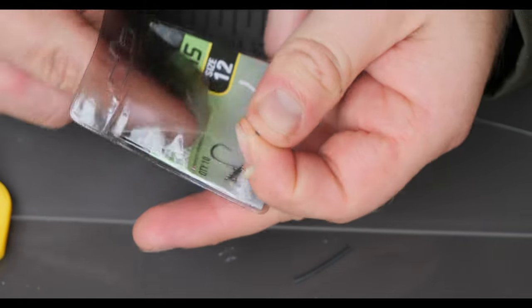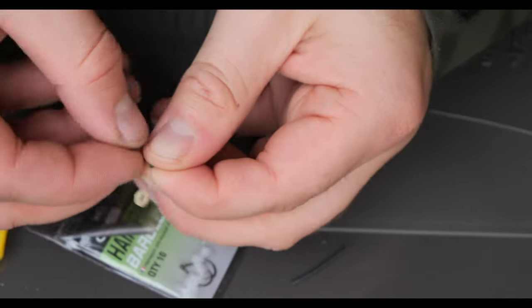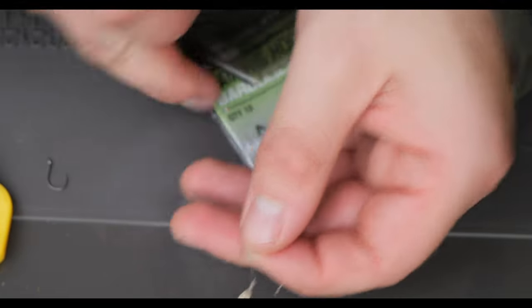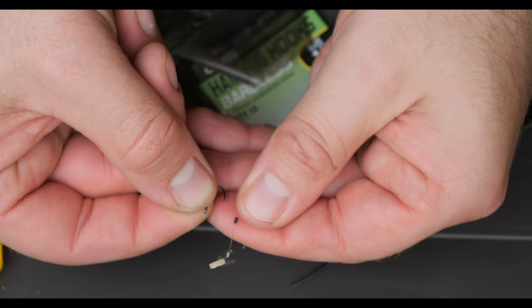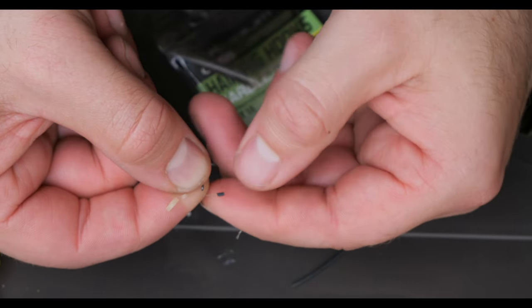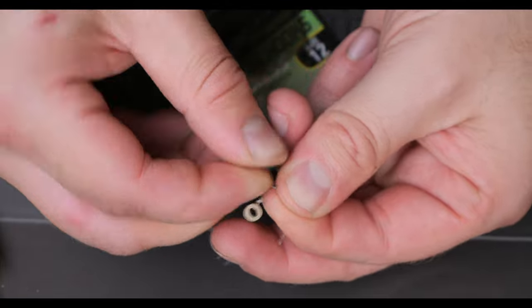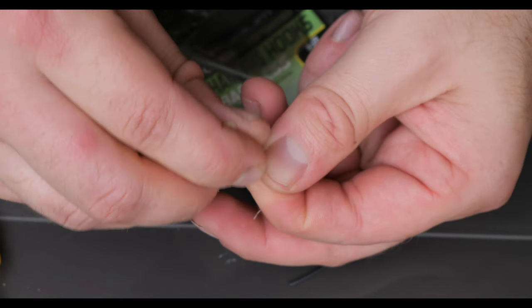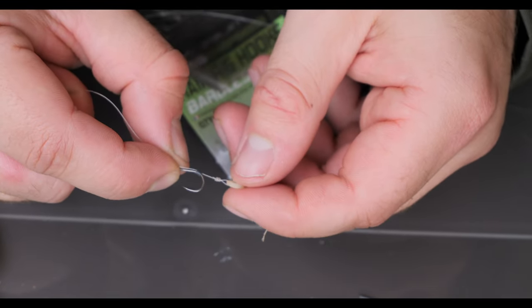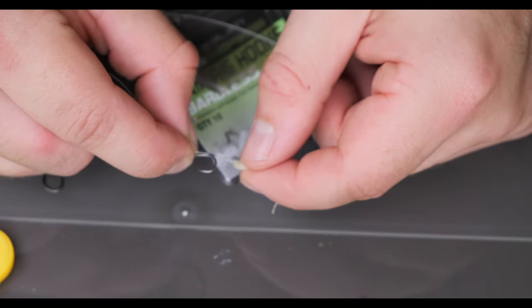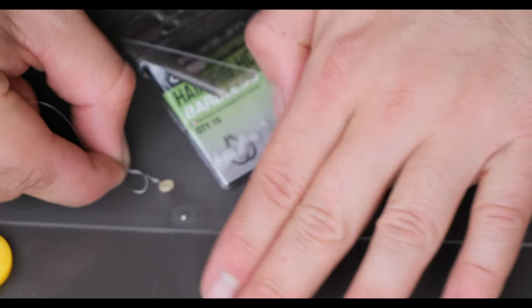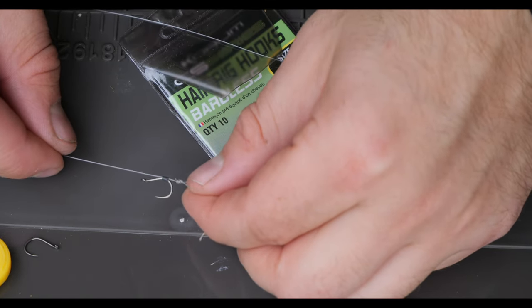Then we want to get one of our hooks. Now what I'm going to do, and this makes your life a lot easier doing it this way around, I'm going to hook through this little bit of rig tube, and then pull my band down probably so that the band's about a centimeter off the top of the hook. So that's how the rig should look so far.